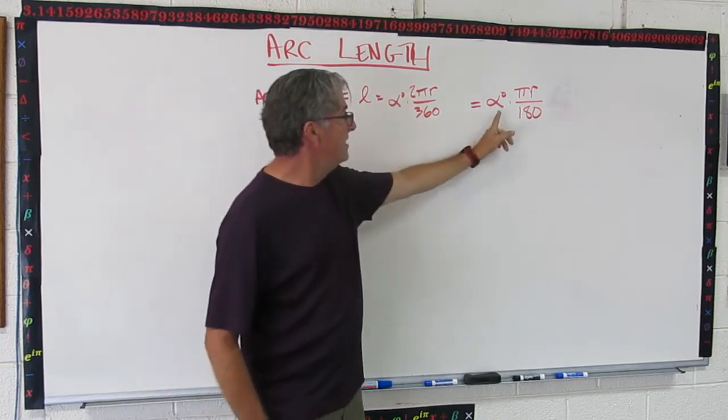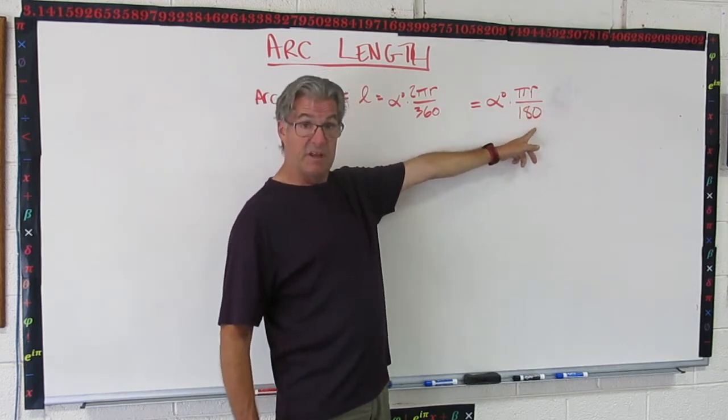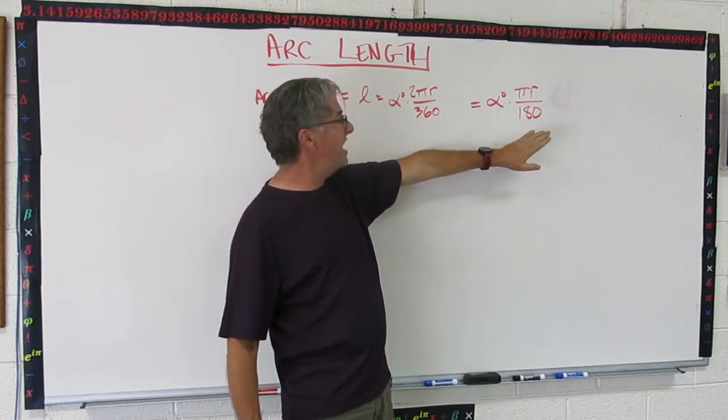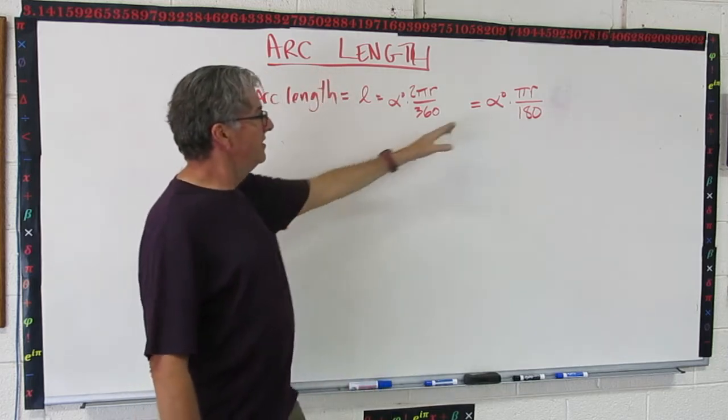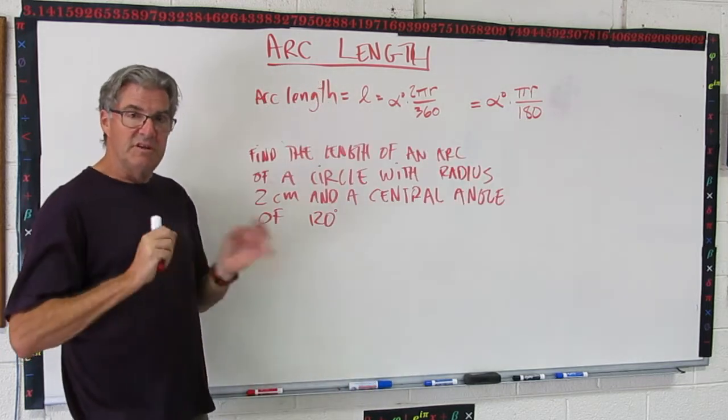We have 2 over 360, so the 2 can go away, and we just have the angle πr over 180. And that's the simplest formula that you can use. This one also works, but this is the one you want to take away with you. That's how to find arc length. Use that formula. So let's do a couple problems.